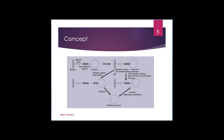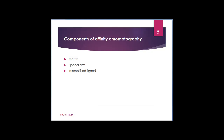In a typical affinity chromatographic technique, the matrix, spacer arm, and immobilized ligand are the three main components present in the column. We will discuss the properties of matrix, spacer arm, and ligand one by one.